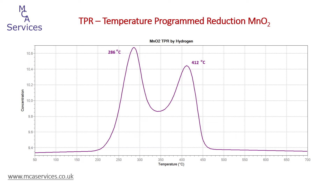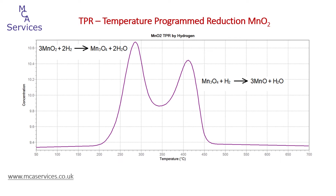The next example is manganese dioxide. This time we have two distinct but not fully resolved reduction peaks, with peak maximums at 286 and 412°C. The question is why the two peaks — and in the case of manganese dioxide, this is because reduction proceeds via an intermediate. The first peak is due to reduction of manganese(IV) oxide to the spinel-structured Mn3O4, and the second peak is due to reduction of Mn3O4 to manganese(II) oxide, MnO. No further reduction of MnO occurs under these experimental conditions.